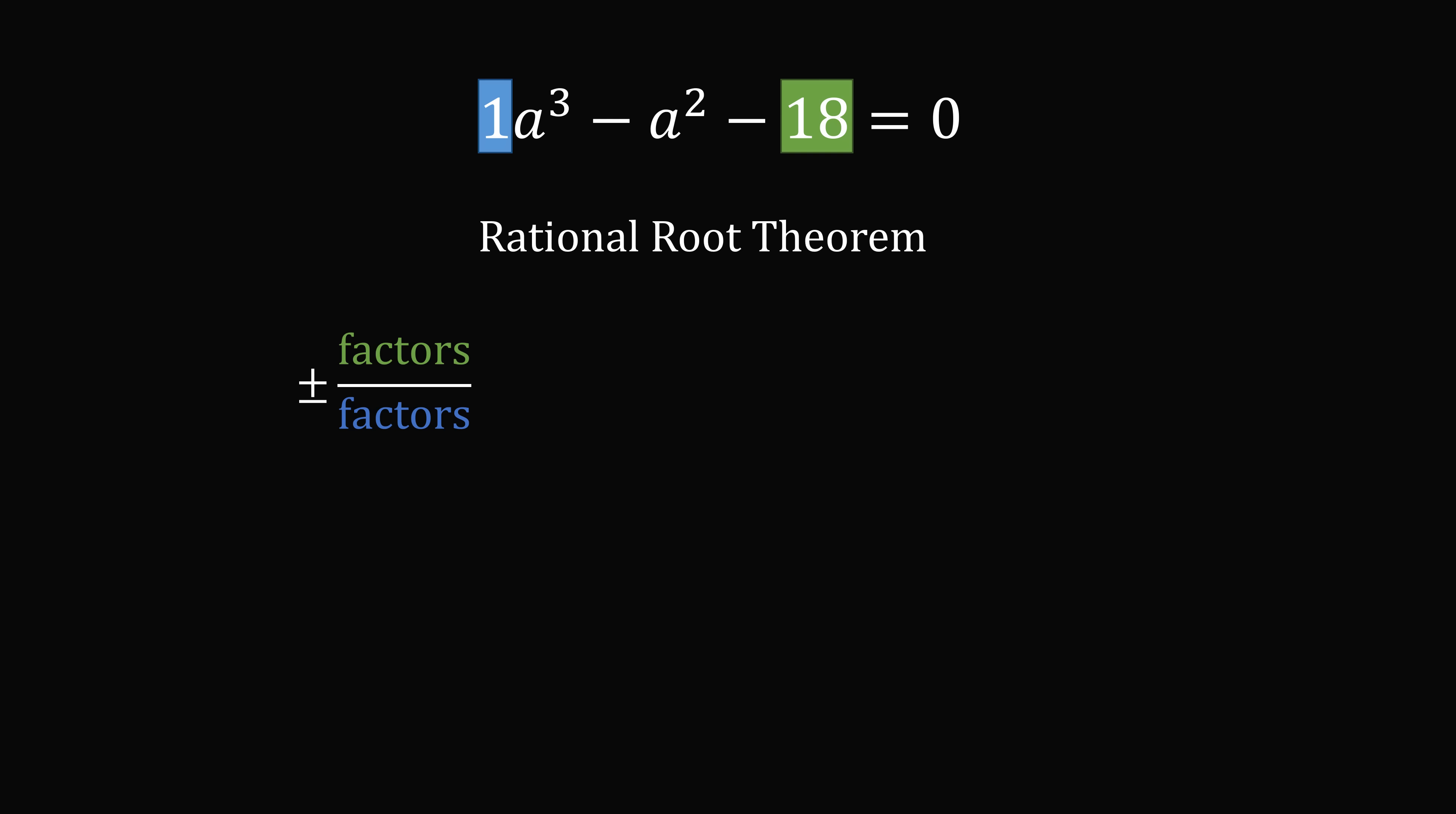So what are factors of 18? 18 factors into 1 times 18, 2 times 9, and 3 times 6. So by the rational root theorem, we look for plus or minus factors of 18 which will be 1, 2, 3, 6, 9, and 18 divided by factors of 1. So this gives us candidate roots that we can check: plus or minus 1, 2, 3, 6, 9, 18.